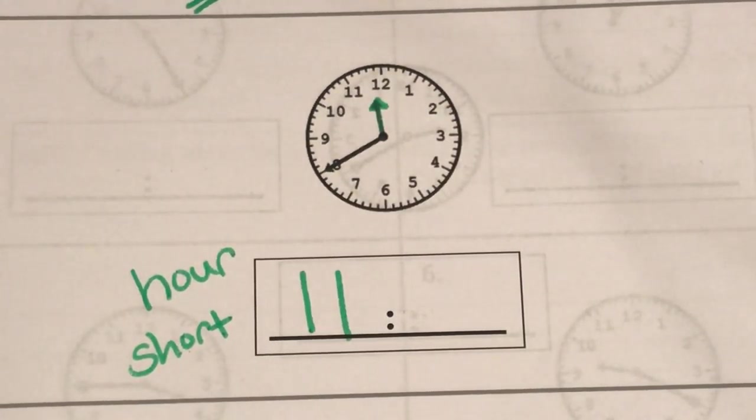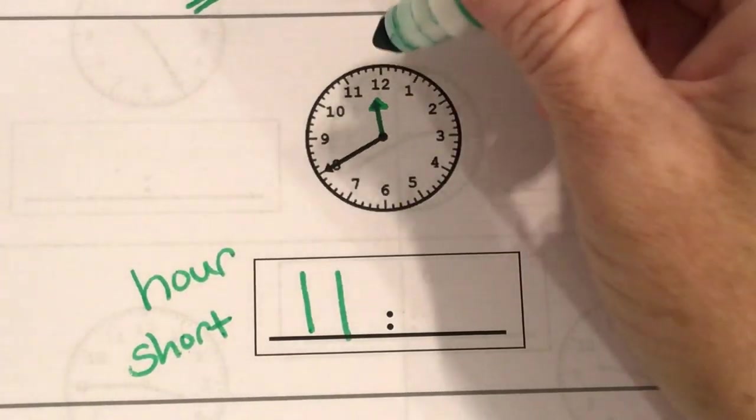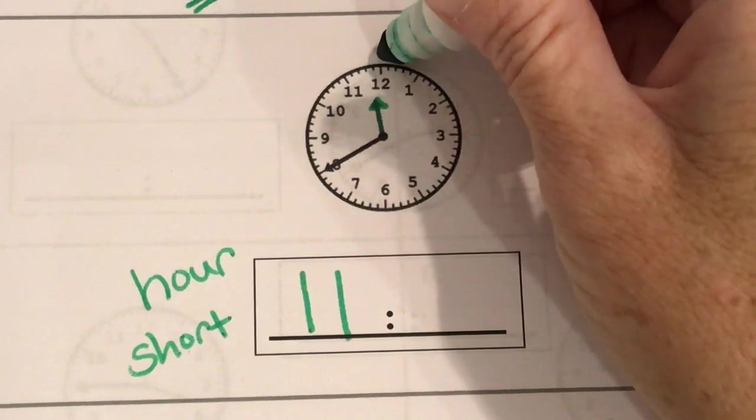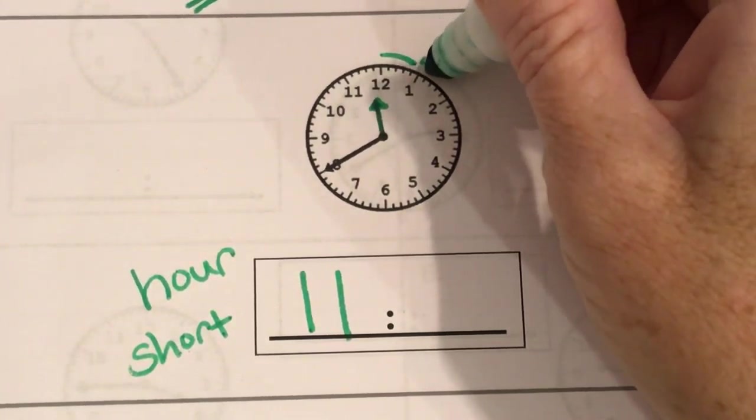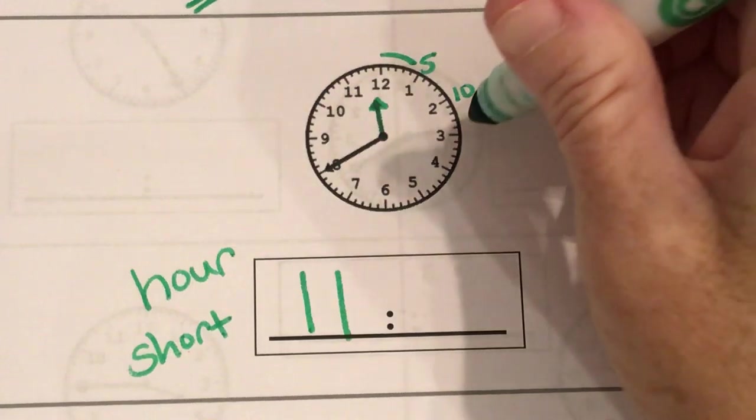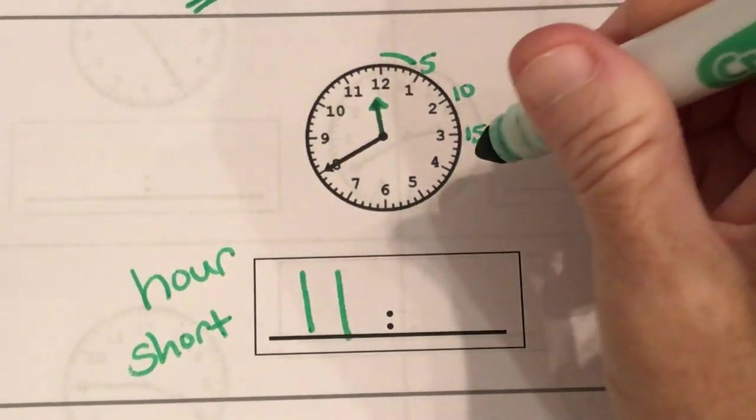Okay now to get our minutes we have to start skip counting and we start here and we get 5, 10, 15.